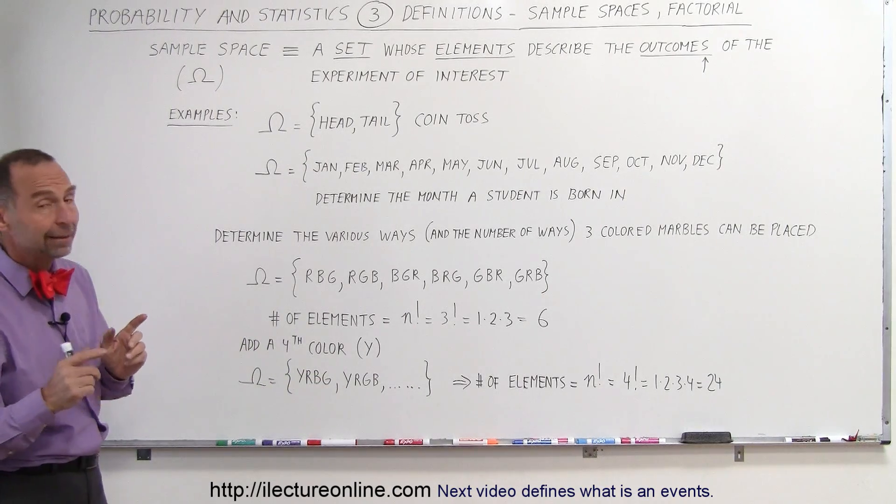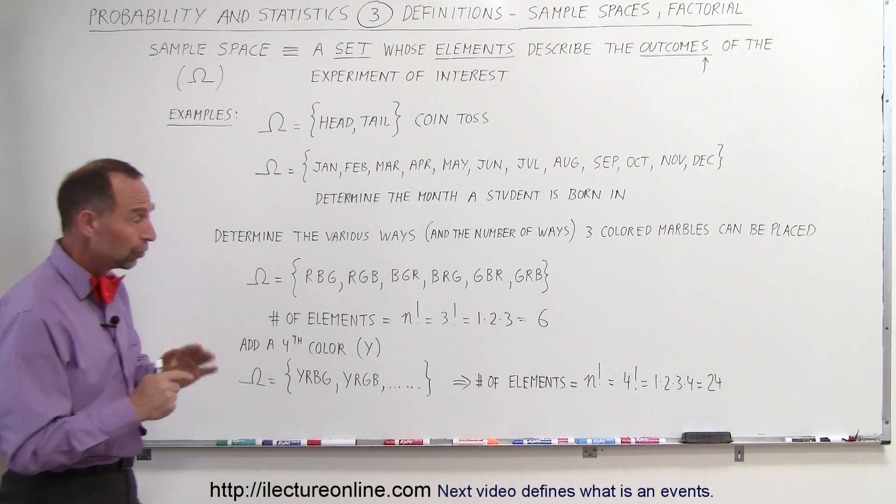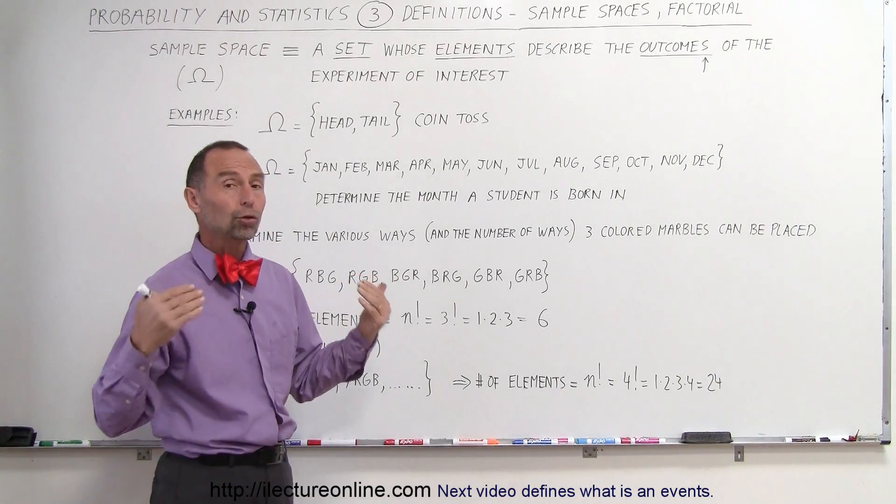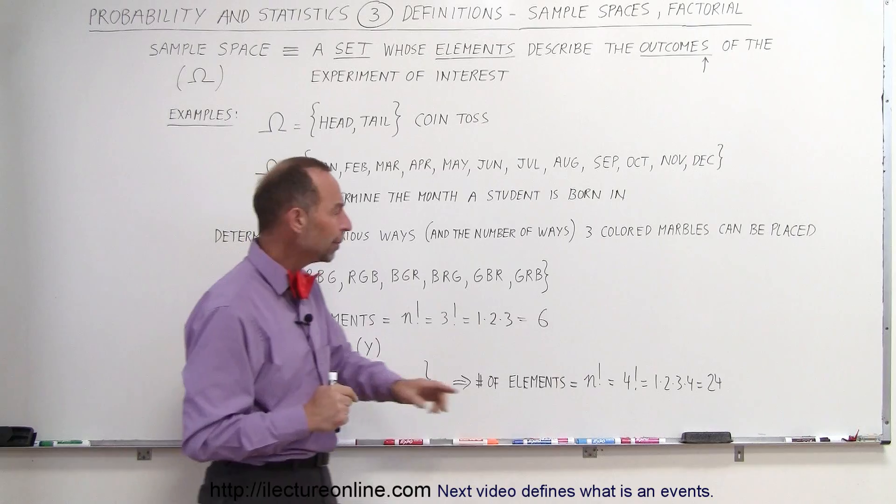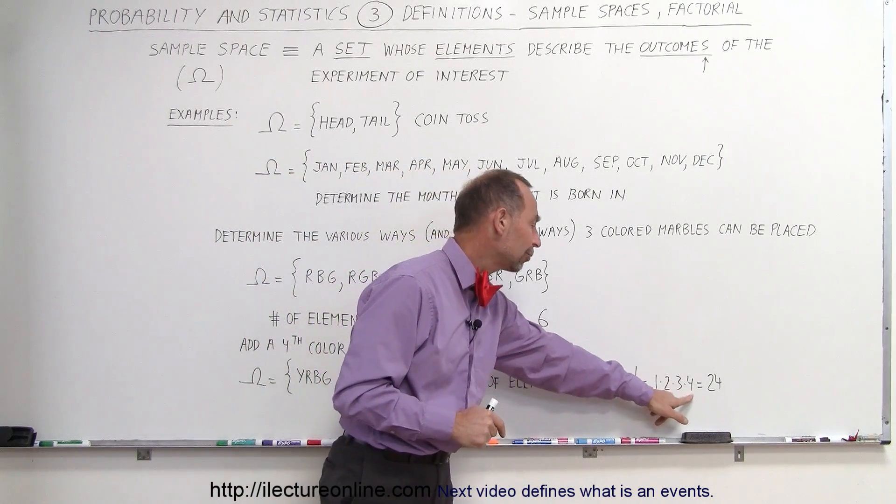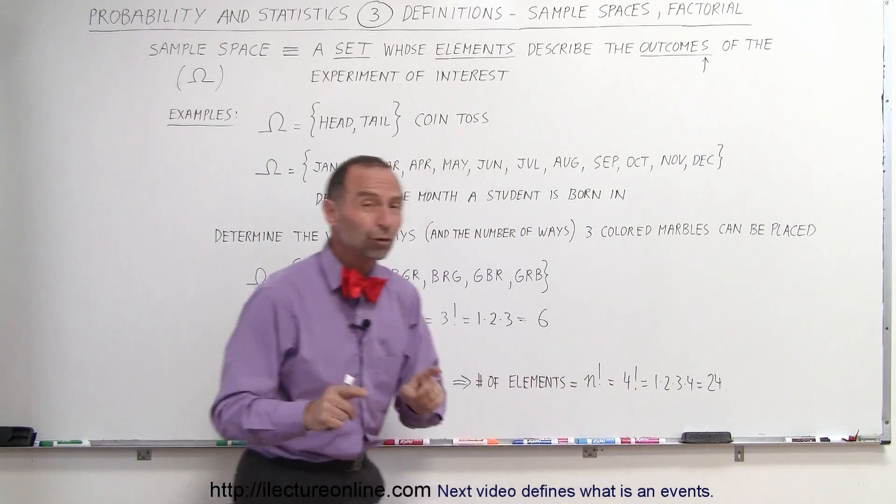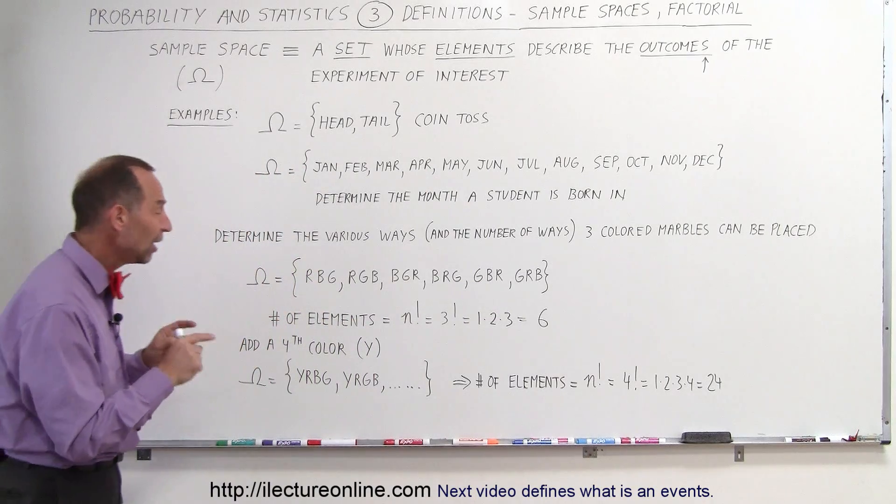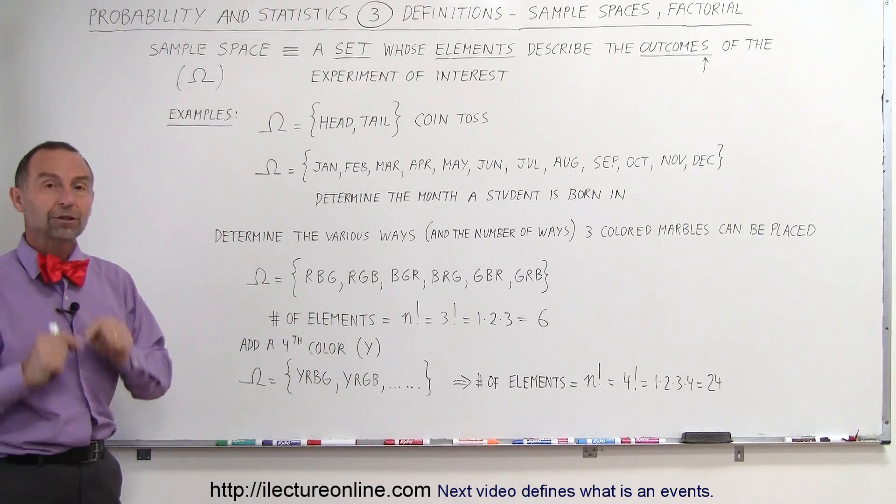How many possibilities are there? Well, in that case there's four marbles, so you say four factorial is the total number of outcomes, the total number of elements. Four factorial is one times two times three times four, which is equal to 24. So there are 24 different ways you can line up four different color marbles.